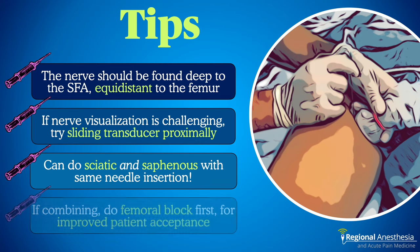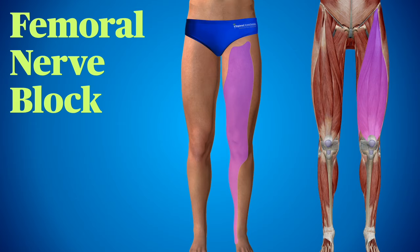Finally, we often find ourselves doing this block in combination with a femoral nerve block. In these cases, it's nice to do the femoral first, as it anesthetizes the skin puncture site and some of the underlying muscle for the subsequent sciatic nerve block.